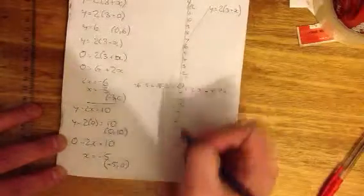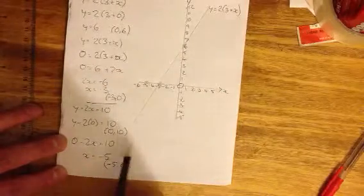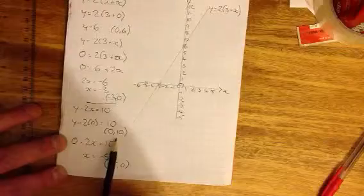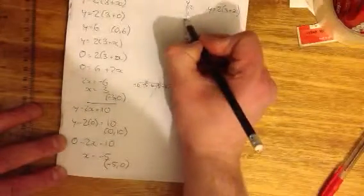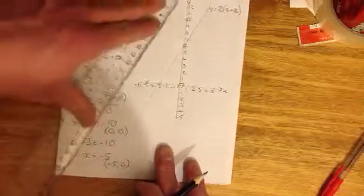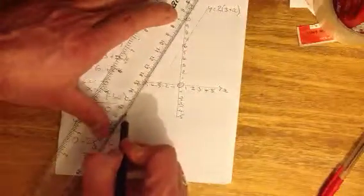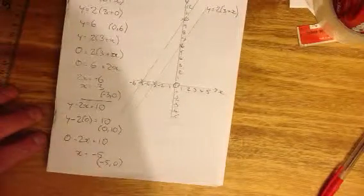And if we plot those, minus 5, 0 is there, and 0, 10 is there. And there we go. You can quite clearly see that the lines are parallel.